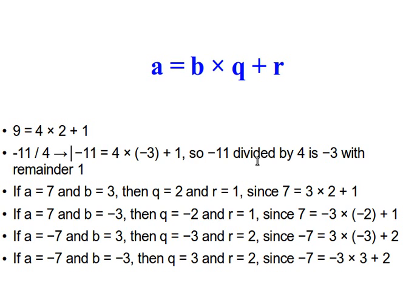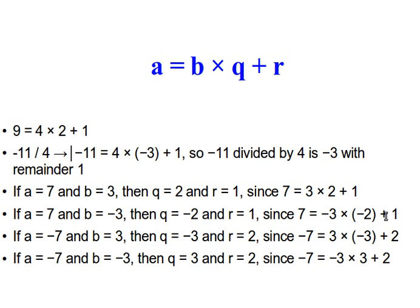More examples from Wikipedia: if A equals 7 and B equals 3, then Q is 2 and R is 1, since 7 equals 3 times 2 plus 1. If A equals 7 and B equals minus 3, then Q is minus 2 and R is 1, since 7 equals minus 3 times minus 2 plus 1 — and minus 3 times minus 2 is 6, plus 1 is 7. Some people say 'negative three' rather than 'minus three' — that's just a different way of saying it.